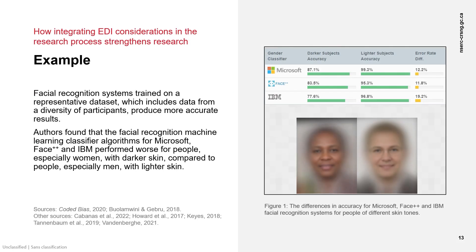Let's look at an example that demonstrates the importance of integrating EDI considerations. When researchers take cultural and gender biases into account in artificial intelligence and machine learning research, mitigate those, and increase the diversity of datasets, they improve the quality and impact of their research. One study has shown that facial recognition systems can misclassify people with darker skin, and especially women with darker skin, whereas they provide more accurate results for people with lighter skin, especially men. Recognition systems have also been shown to misidentify transgender individuals and those with higher-pitched voices or certain accents. The misidentification is due in large part to the lack of sufficient diversity in the dataset used for machine learning algorithms, which then replicates and amplifies cultural and gender biases, leading to inaccuracies, inequities, and discrimination.